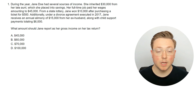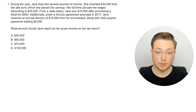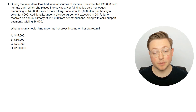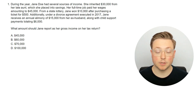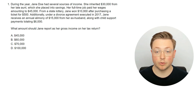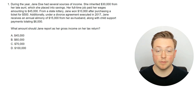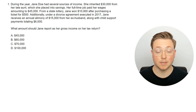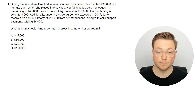Here's the first question. During the year, Jane Doe had several sources of income. She inherited $30,000 from her late aunt, which she placed in savings. Her full-time job paid her wages amounting to $45,000. From a state lottery, Jane won $10,000 after purchasing a ticket for $500. Additionally, under a divorce agreement executed in 2017, Jane receives an annual alimony of $15,000 from her ex-husband, along with child support payments totaling $6,000. What amount should Jane report as her gross income on her tax return?